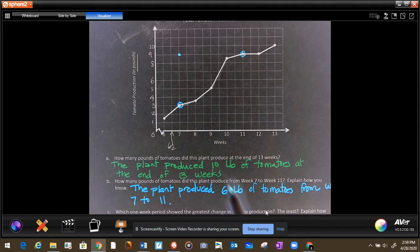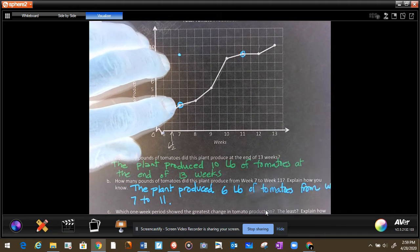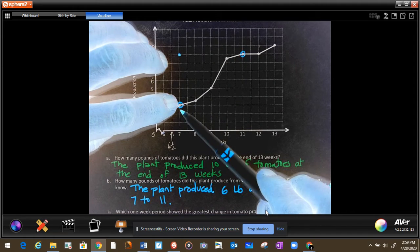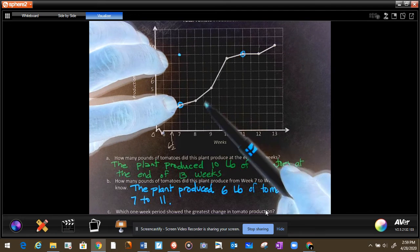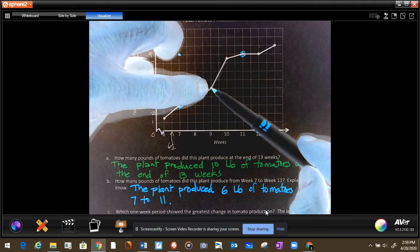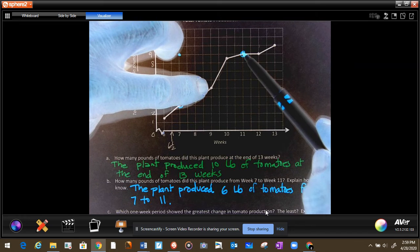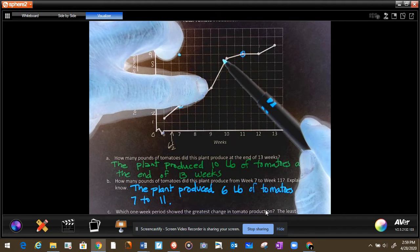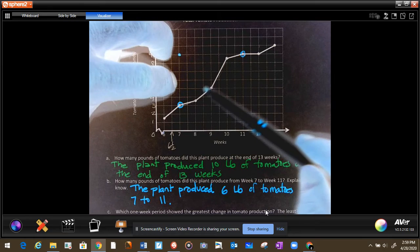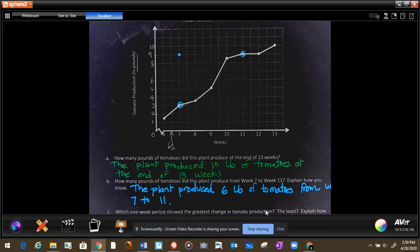And we can break it down and say that from week 7 to 9, it was 2 pounds, and from week 9 to 11 was 1, 2, 3, 4. That'll be 6 pounds, which is exactly what we came up with.